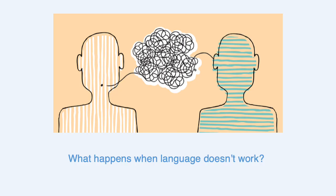Part of the course also deals with what happens when language doesn't work. We're going to talk about acquired language disorders, for example after a stroke or traumatic brain injury. We'll also talk about developmental language disorders, which are present from the onset of language, as well as the language profiles of individuals with autism spectrum disorder.